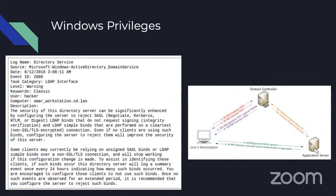Tools like ProcDump, Mimikatz, and Volatility are totally able to look at memory, pull it out, and dig through for passwords. Windows stores password hashes in memory whenever you're logged into a Windows box. It just takes one of those three tools to pull the hash from memory, then use it in pass-the-hash attacks or crack it with things like HashCat or RainbowTables.